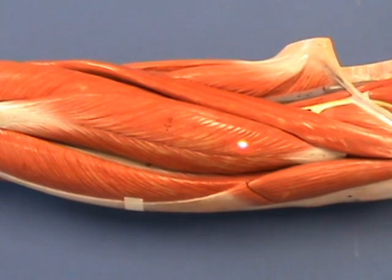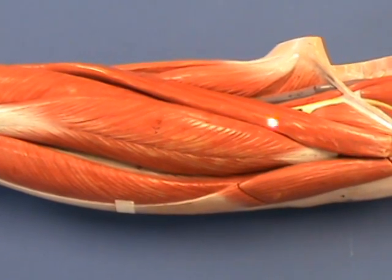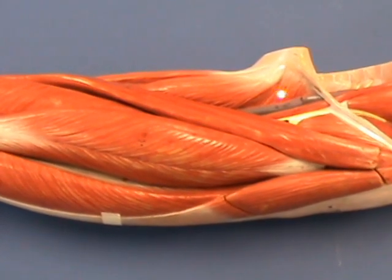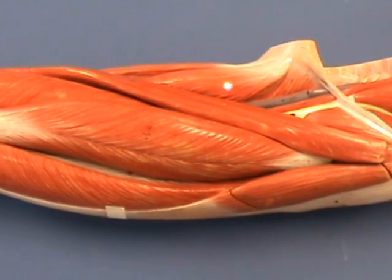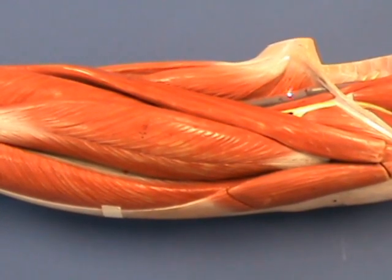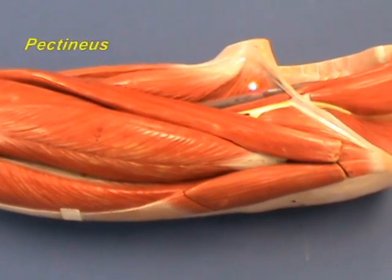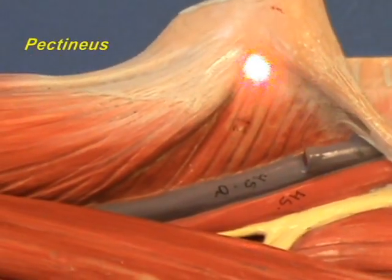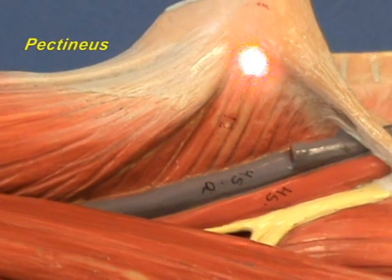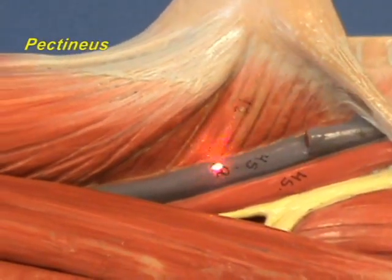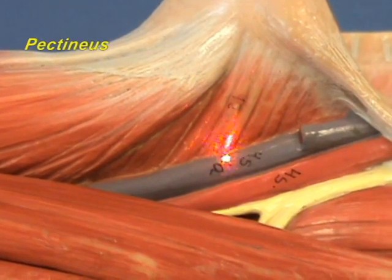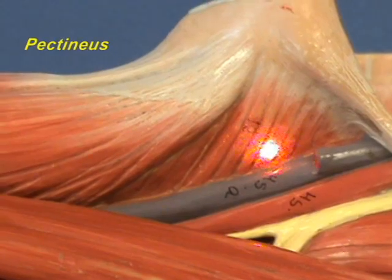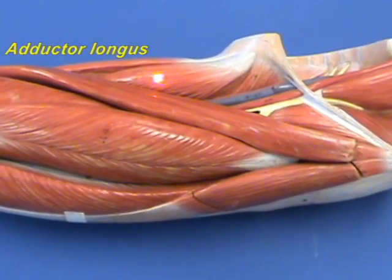Right over here are the muscles of the anterior compartment, including the sartorius and the rectus femoris. We want to look at a couple of muscles that are part of the medial compartment. First, we'll look at the pectineus muscle right over here. The pectineus muscle has an origin on the pectineal line and the nearby bone of the pelvis, and inserts on the proximal femur. The pectineus adducts and flexes the thigh at the hip joint.